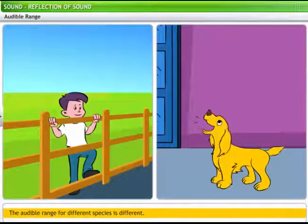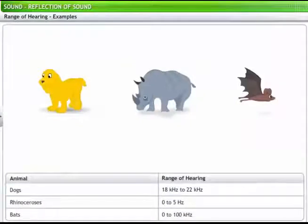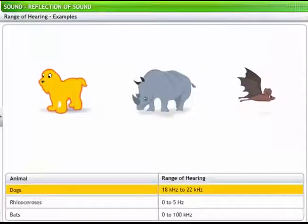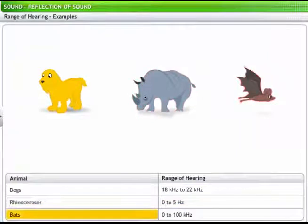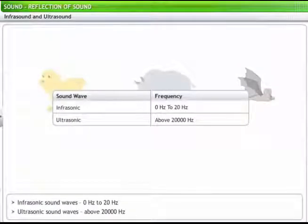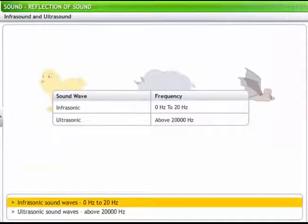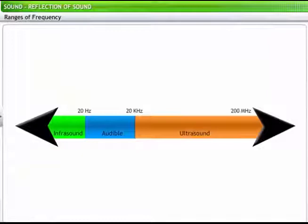Dogs, for example, have an audible range much higher than that of humans. That's why people have watchdogs. Dogs can hear many sounds that are not audible to human ear. The table shows the hearing range for three animals. Dogs can hear sound waves ranging from 18 kHz to 22 kHz. Rhinoceros can hear sound waves ranging from 0 Hz to 5 Hz. Bats can hear sound waves ranging from 0 Hz to 100 kHz. Sound waves that have a frequency less than 20 Hz are called infrasonic sound waves. These are also referred to as infrasound waves or infrasonics. Similarly, sound waves that have a frequency greater than 20,000 Hz are called ultrasonic sound waves. These are also referred to as ultrasounds or ultrasonics. A summary of the various ranges of sounds is shown here.